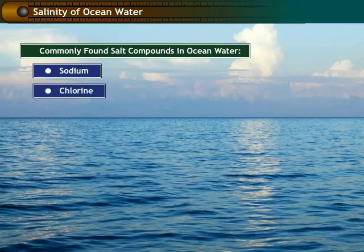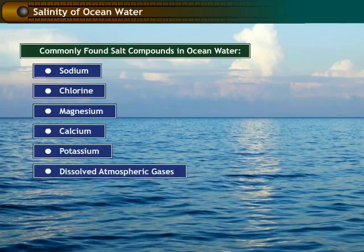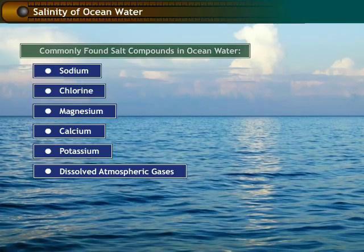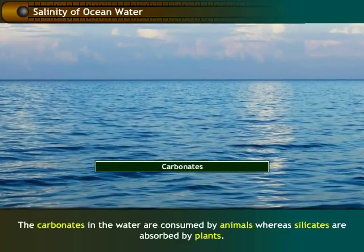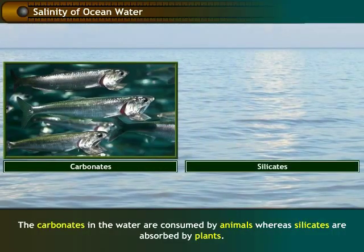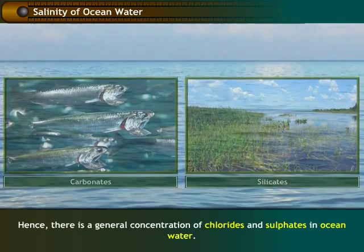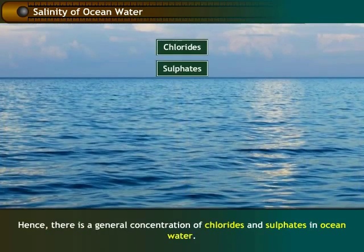chlorine, magnesium, calcium and potassium. Ocean waters also contain dissolved atmospheric gases. The carbonates in the water are consumed by animals, whereas silicates are absorbed by plants. Hence, there is a general concentration of chlorides and sulfates in ocean water.